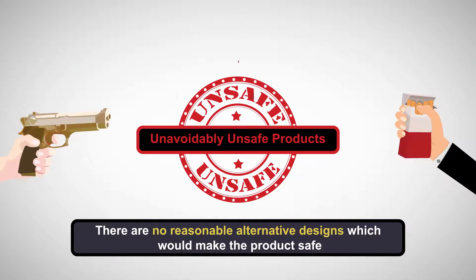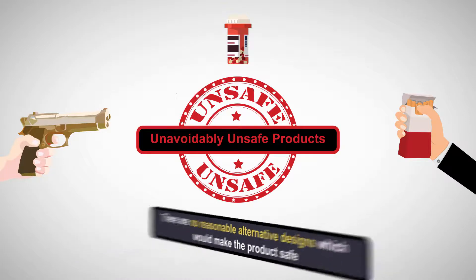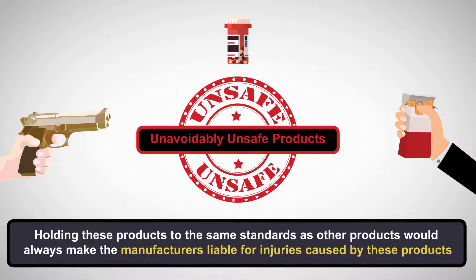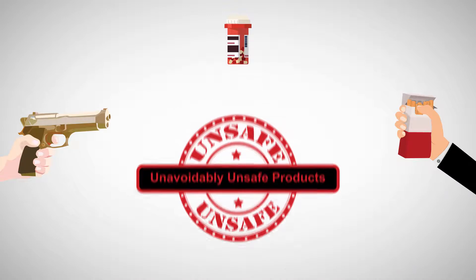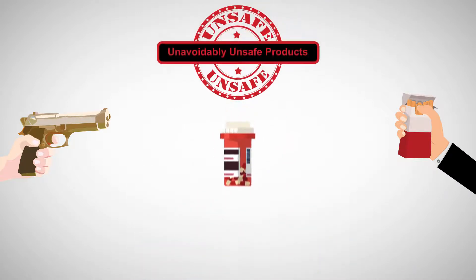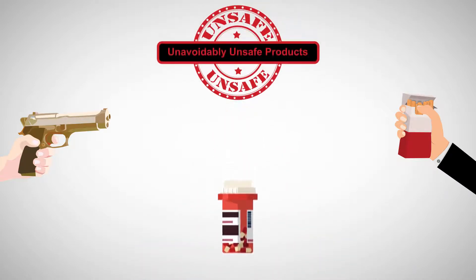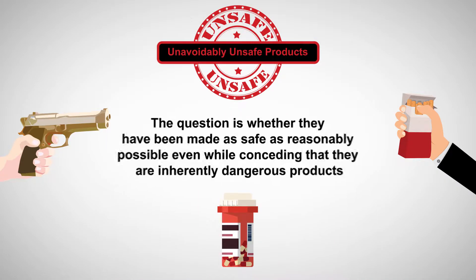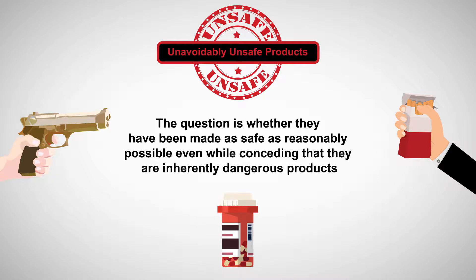Guns, cigarettes, and many prescription drugs are examples of unavoidably unsafe products. Holding these products to the same standards as other products would always make the manufacturers liable for injuries caused by these products. Therefore, these products cannot be considered defective merely because they are unsafe. Instead, the question is whether they have been made as safe as reasonably possible, even when conceding that they are inherently dangerous products.